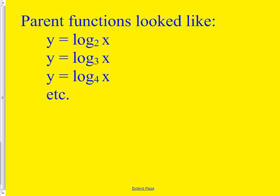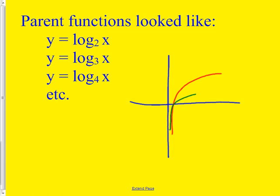What's the difference between log base 2, log base 3, and log base 4? They all go through the same spot because if you put a 1 in for the argument you always get zero. The bigger the base, the sharper it turns — think of it like a sharper right turn for a car.